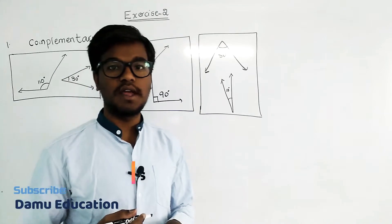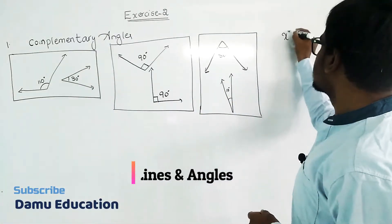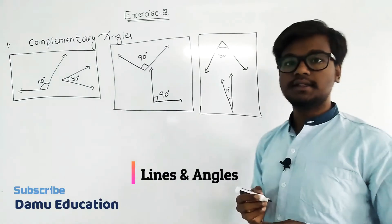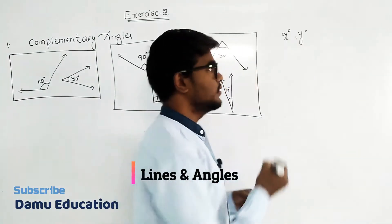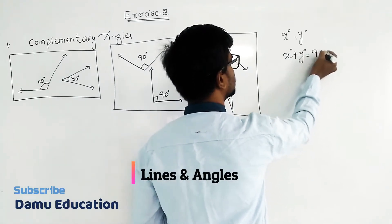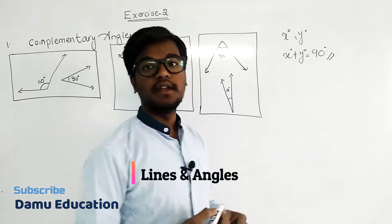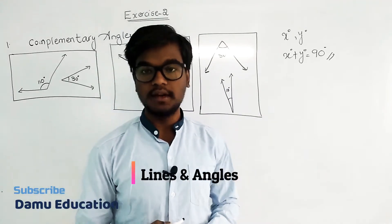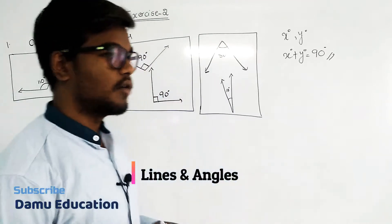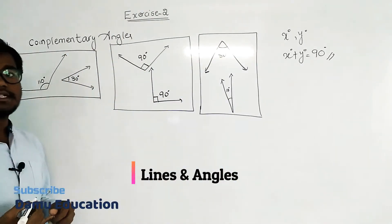Let's take x and y as the two angles. So x plus y equals 90 degrees. If that condition is satisfied, we can call x and y complementary to each other. Our first question is 110 degrees plus 30 degrees.